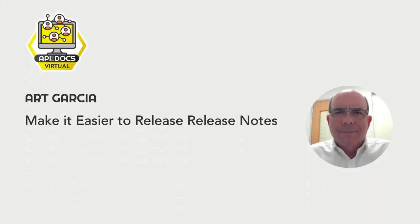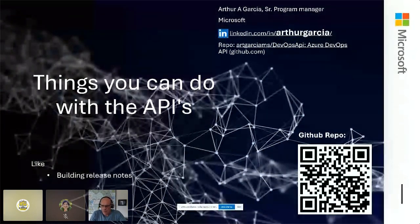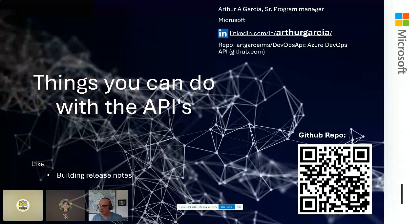Welcome everyone. My name is Art Garcia and I'm going to talk to you about things you can do with APIs. One of the problems that a lot of program managers have is getting release notes out. You have a build that just got created, you've got four or five teams working on it, they're all checking in stuff, they've got user stories all over the place. And now they come to you and say, I need release notes for these 400 user stories that we just worked through. Typically you go to each user story, cut and paste some information, and create release notes. I found a better way of doing that.